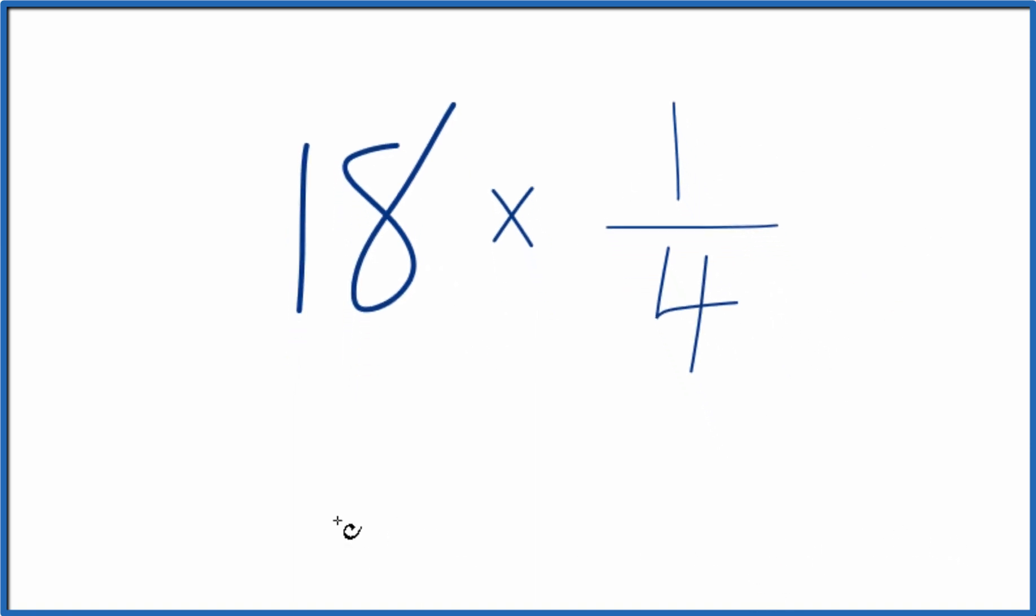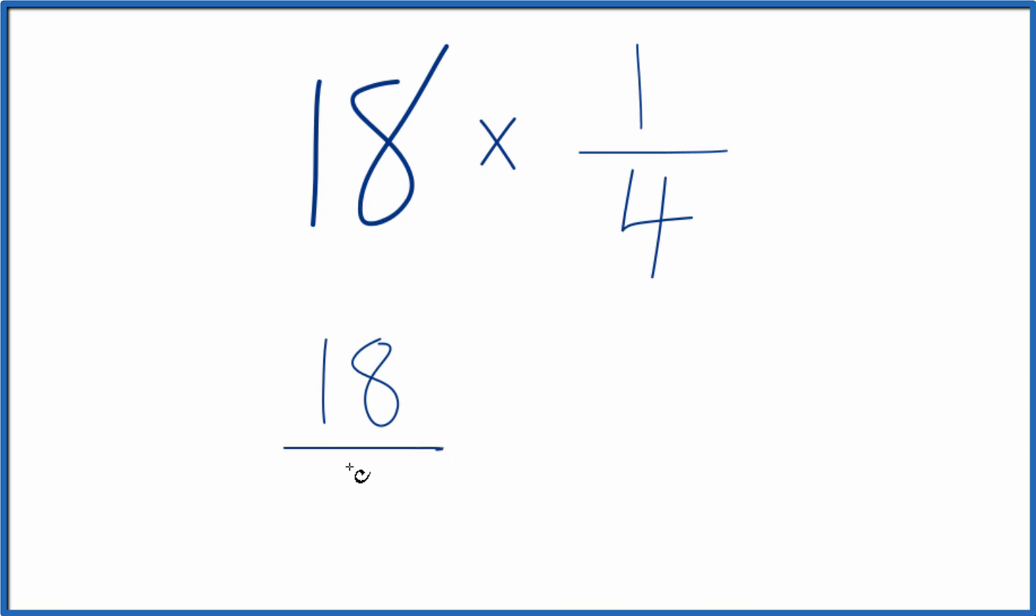Another way to do this would be to take 18 and call that 18 over 1. It's still 18, we're just dividing by 1. Now we have a fraction, and with this fraction here, we can multiply that times one-fourth.